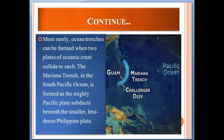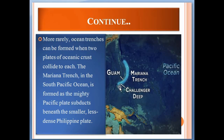More rarely, oceanic trenches can form when two plates of oceanic crust collide. The Mariana Trench in the South Pacific Ocean is formed as the massive Pacific Plate subducts beneath the smaller, less dense Philippine Plate. This is an example of an oceanic-oceanic collision, which is a rare example of how oceanic trenches can form.